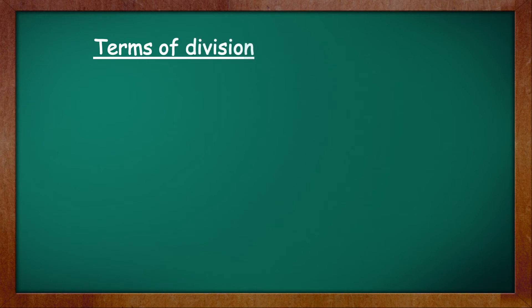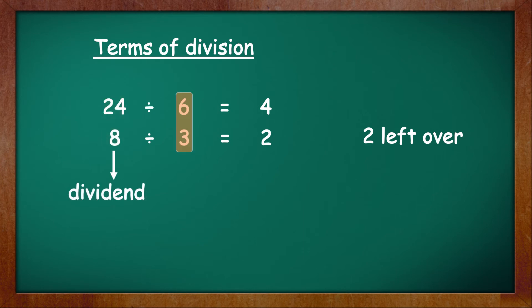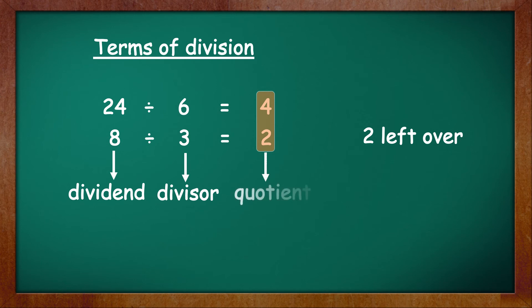Next we will learn the terms used for the numbers in division. From the examples we did, we got 24 divided by 6 is equal to 4, and 8 divided by 3 is equal to 2 with 2 left over. The first number, which is the number being divided, is called the dividend. The second number, which is dividing the first number, is called the divisor. The answer is called the quotient, and sometimes there is a number left over — it is called the remainder.